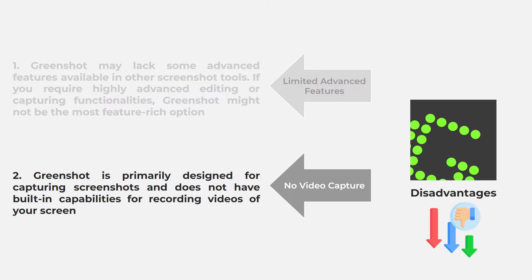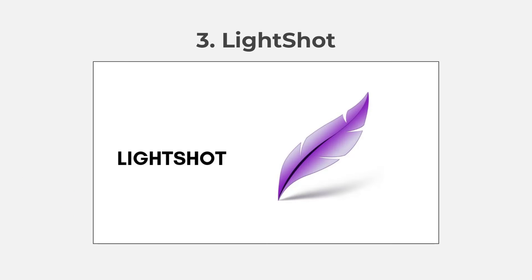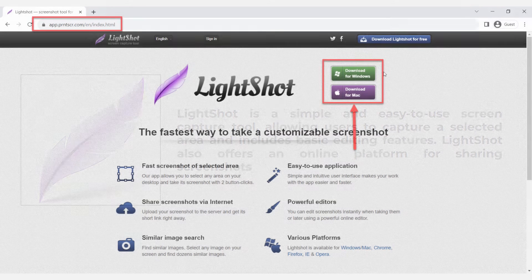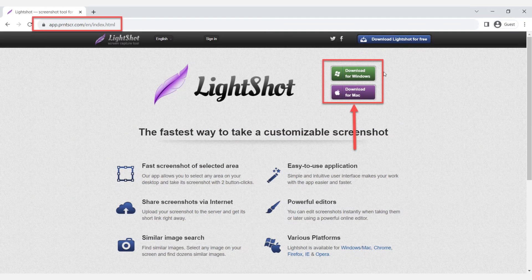Let's move on to the next screen recording software you can use for free — LightShot. LightShot is a simple and easy-to-use screen capture tool, allowing users to capture a selected area and includes basic editing features. LightShot also offers an online platform for sharing screenshots. To download and install the application on your device, navigate to the download link, find the download option, and follow the on-screen instructions to install the tool.